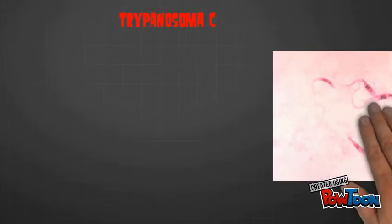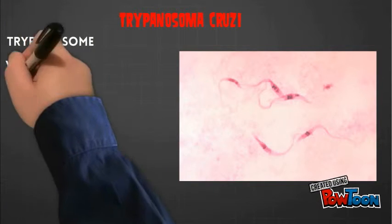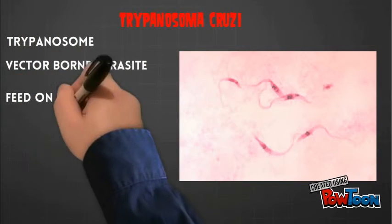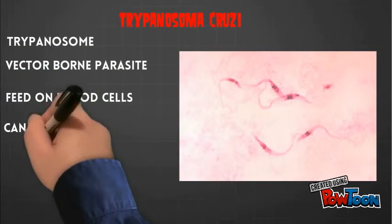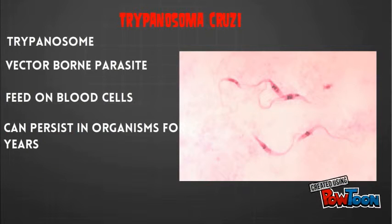Going back to the underlying cause of Chagas disease is the parasite Trypanosoma cruzi. This belongs to the Trypanosome family of parasites, which are vector-borne parasites that typically feed on blood cells, and have been known to persist in organisms for years after the initial infection, creating a sort of natural reservoir.